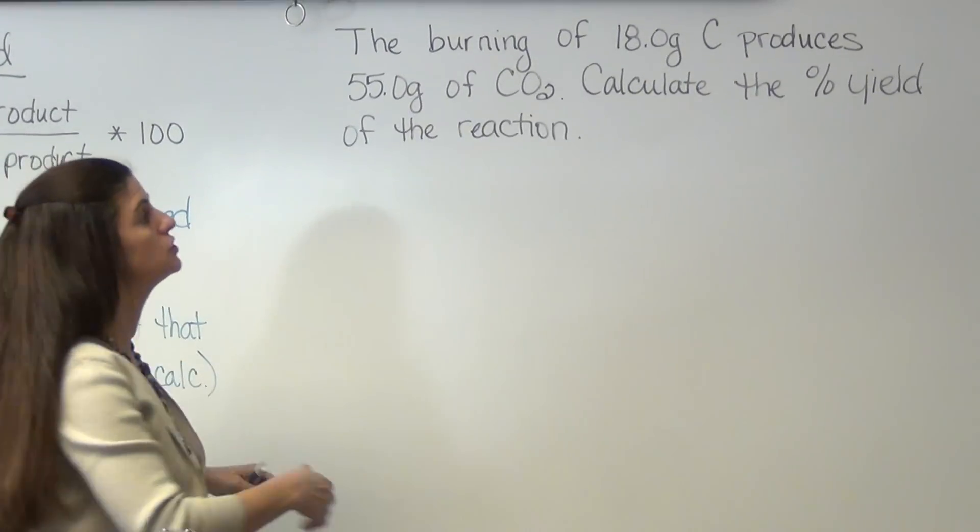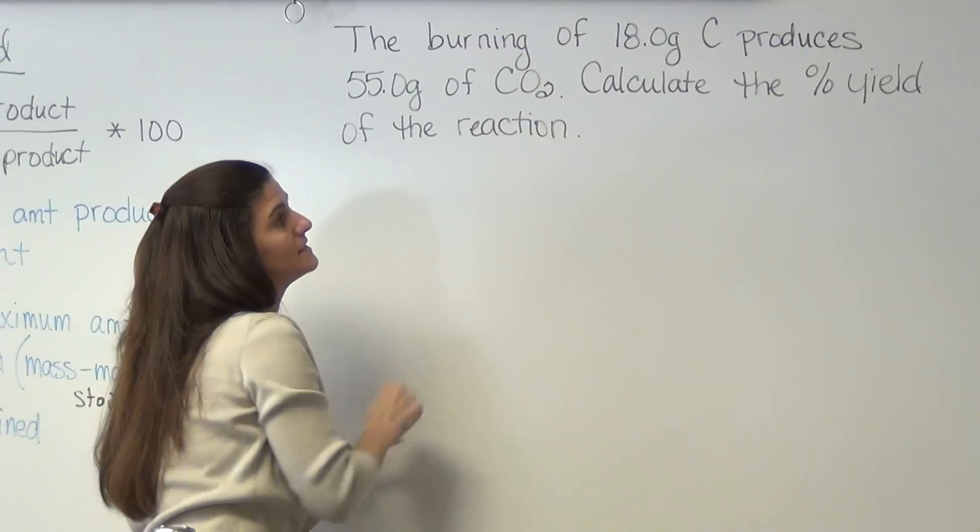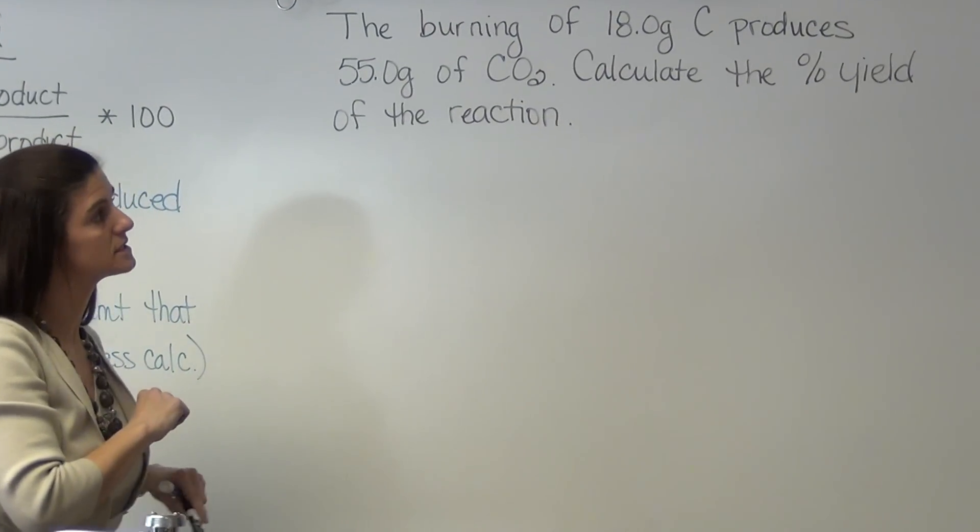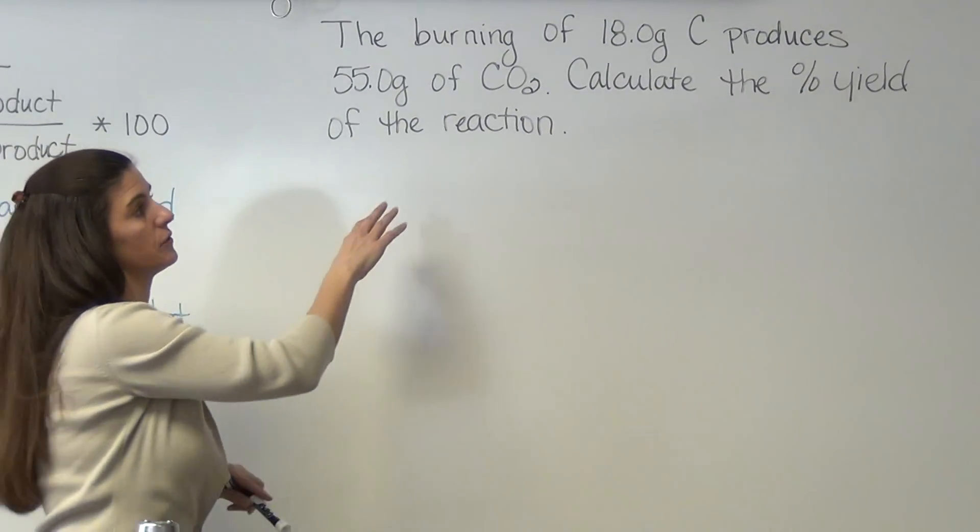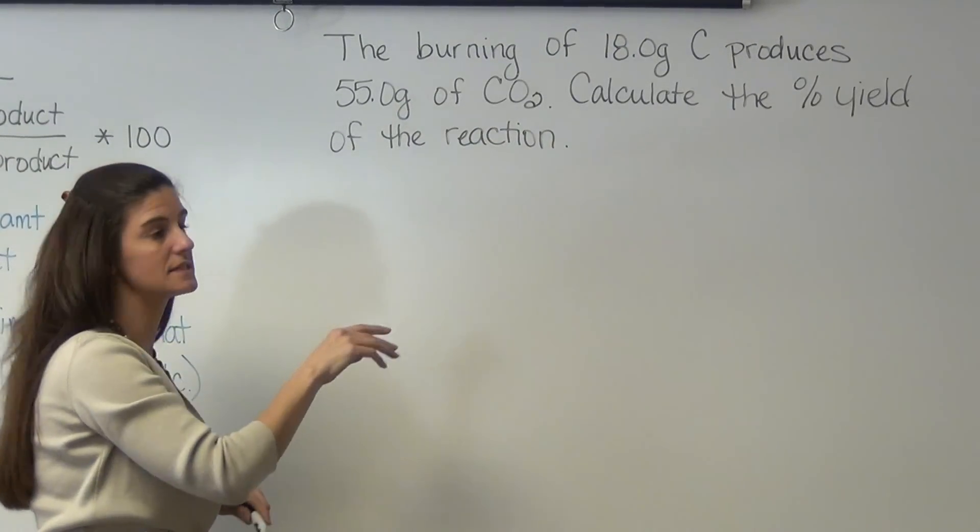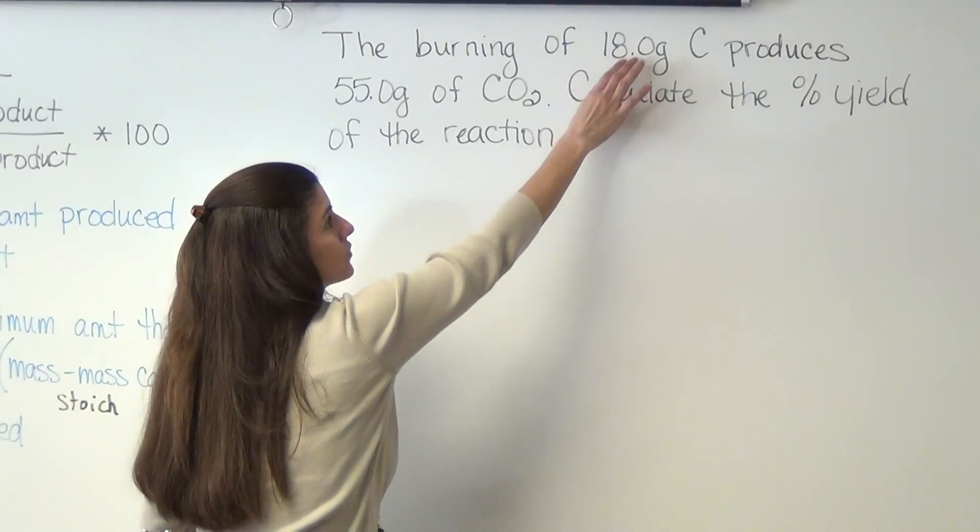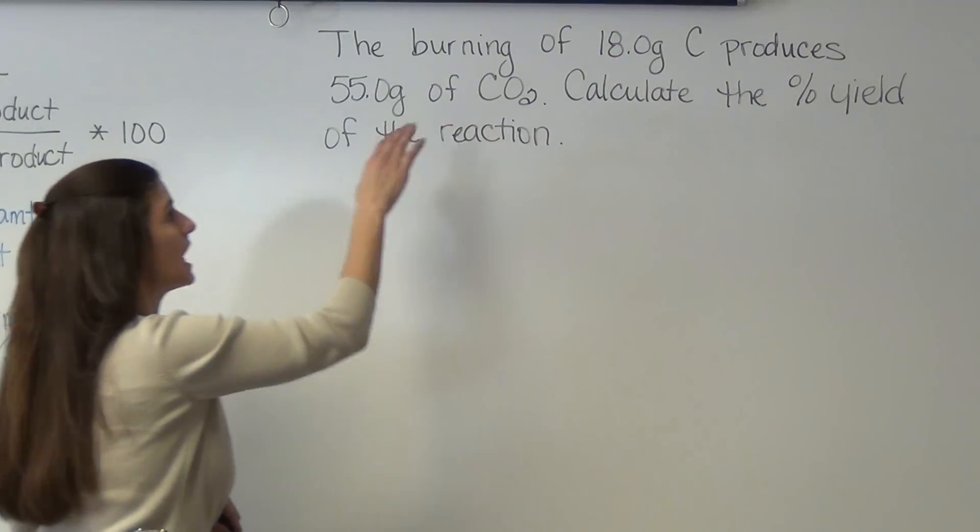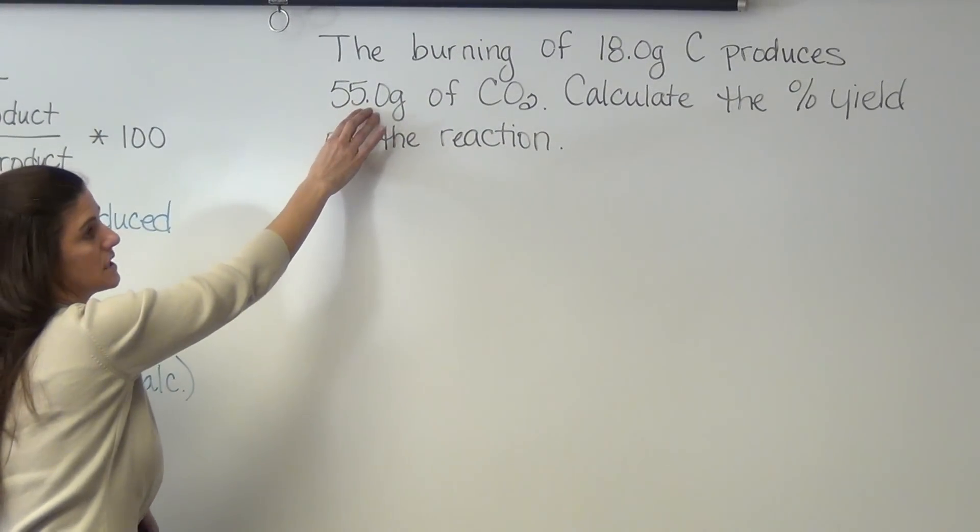Notice we have two different masses, different than the limiting reactants, because before we talked about limiting reactants, if you had two masses, it was a limiting reactant problem. In this case, we have 18 grams that we're starting with and it's telling us that we're producing a certain amount.